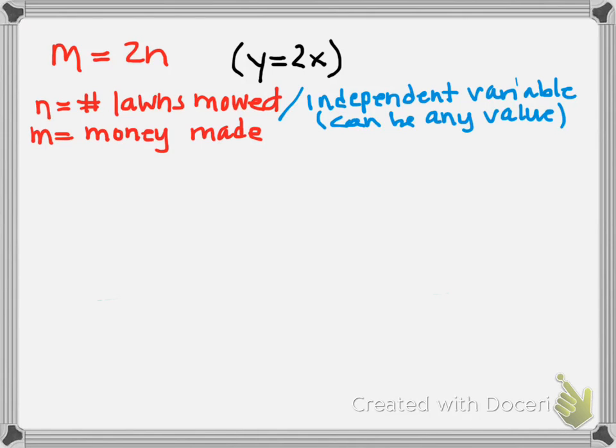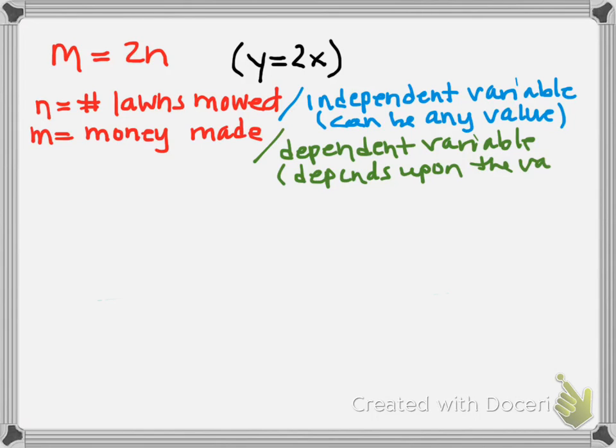Once I give a value to the n, there's only one answer I can get for the m because I do the math and I get it. So m is dependent upon what I plug in for n. So m is called a dependent variable and that's because it depends upon the value of the other variable.